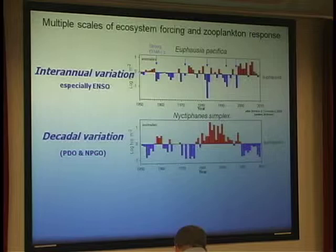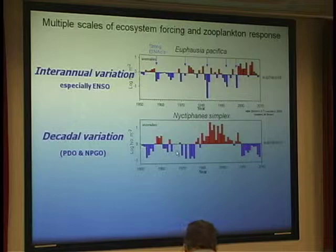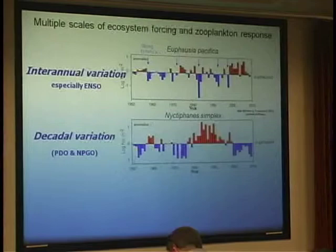This is another species of krill, Thysanoessa spinifera, from the same plankton samples, sampled in exactly the same part of the ocean, which shows a markedly different time series. There is interannual variability in this record, certainly, but the dominant signal is the decadal signal, with the period from the late 70s to the late 90s of anomalously high abundance, preceded and followed by periods of anomalously low abundance. Once again, no evidence of a long-term trend upward or downward associated with the warming seen from the Scripps pier record.